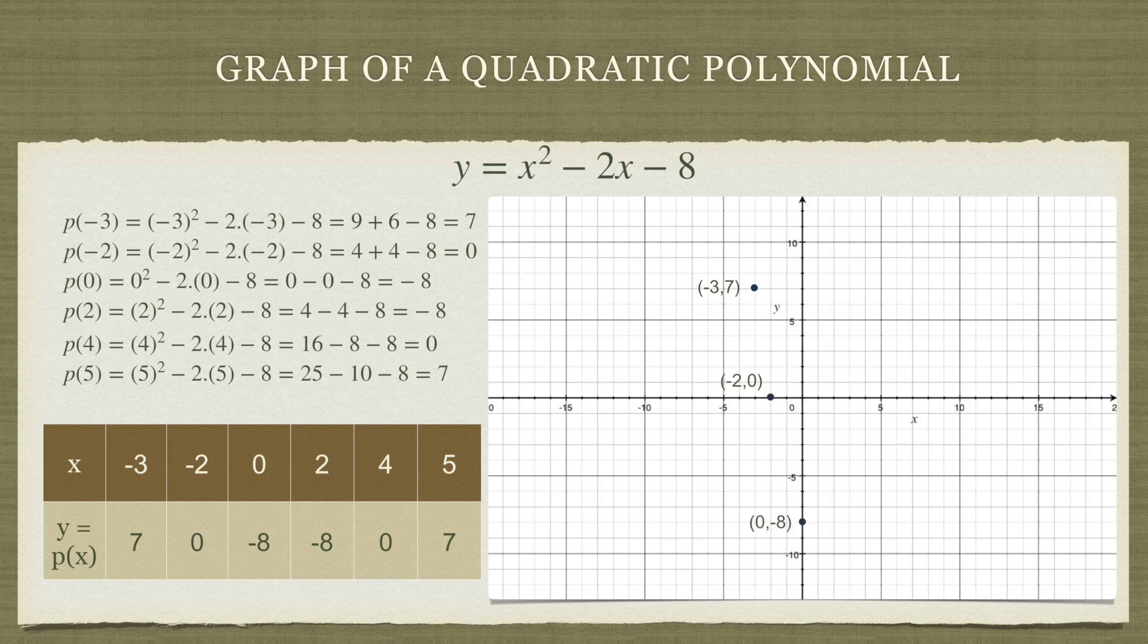Similarly the third point will be 0, minus 8. Then we have 2, minus 8. Then we have 4, 0 and we have 5, 7.